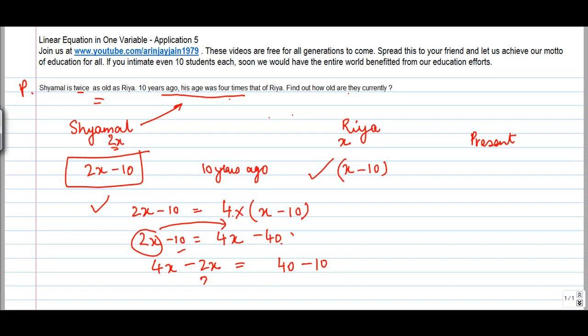Solving this equation, 4X minus 2X gives me 2 times X is equal to 40 minus 10 or 30, which means that if I have to put X here, I divide both the sides by 2, so X is equal to 15.